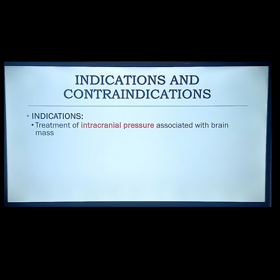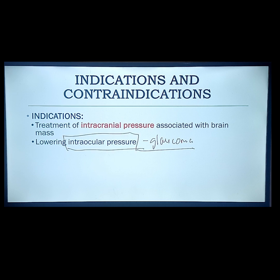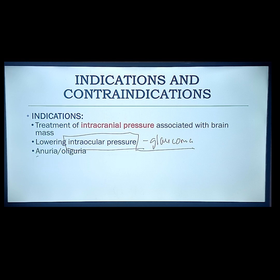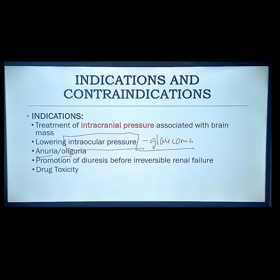Another indication is lowering intraocular pressure in patients with glaucoma. Glaucoma patients have high pressure inside the eye orbit due to elevated aqueous humor. Osmotic diuretics absorb the excessive fluid from the eye into the blood vessel, raising blood volume, then to the kidney for filtration, increasing GFR and urinary output. If too much fluid is lost and not replaced, dehydration may occur, causing a shock syndrome. Another indication is anuria and oliguria — absence or deficit urination — and promotion of diuresis before irreversible renal failure.